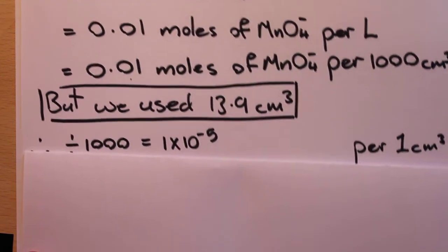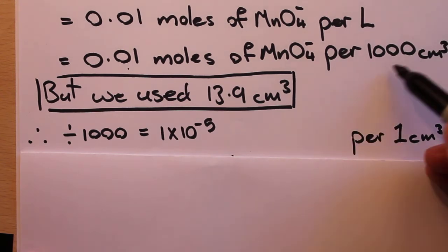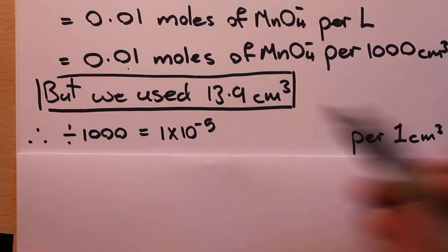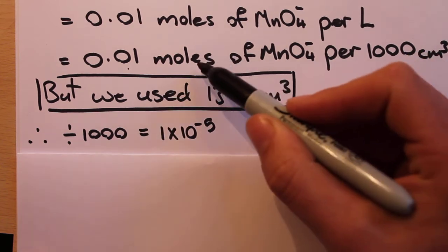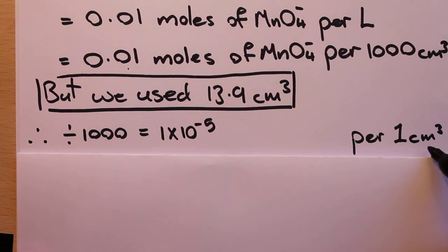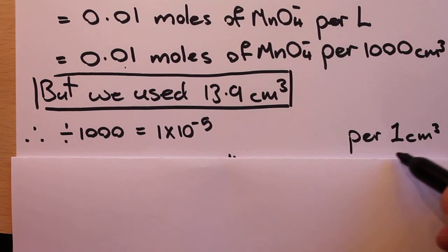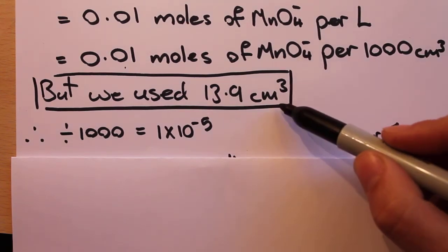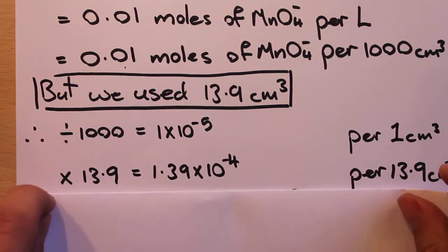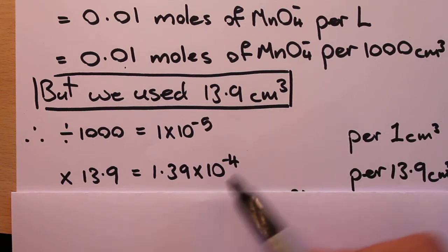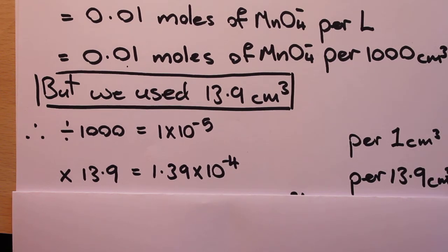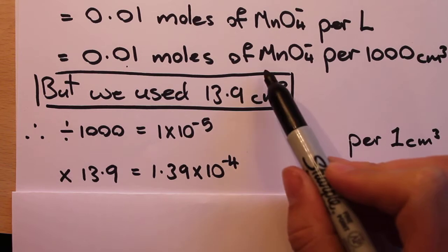We need to divide by 1000 to go from 1000 cm³ to one cm³. By dividing 0.01 by 1000 we get 1×10⁻⁵ moles of MnO4⁻ per cm³. Since we want 13.9 cm³, we multiply by 13.9, giving us 1.39×10⁻⁴ moles of MnO4⁻ per 13.9 cm³. We now know how many moles of our MnO4⁻ ion were used.